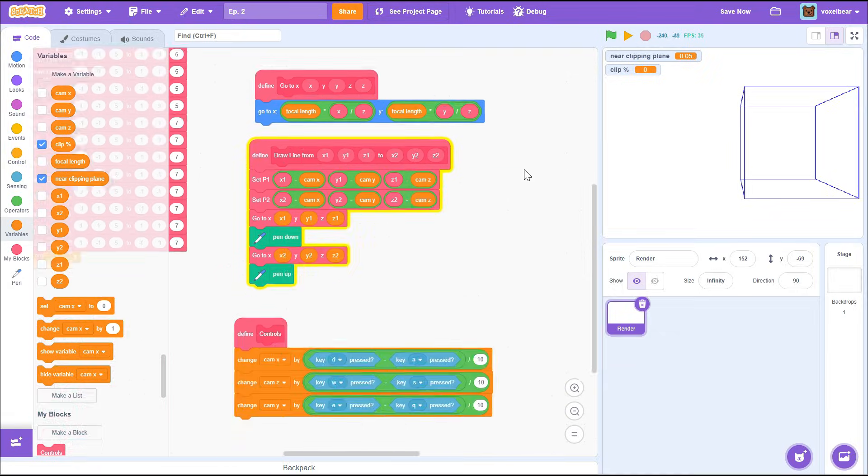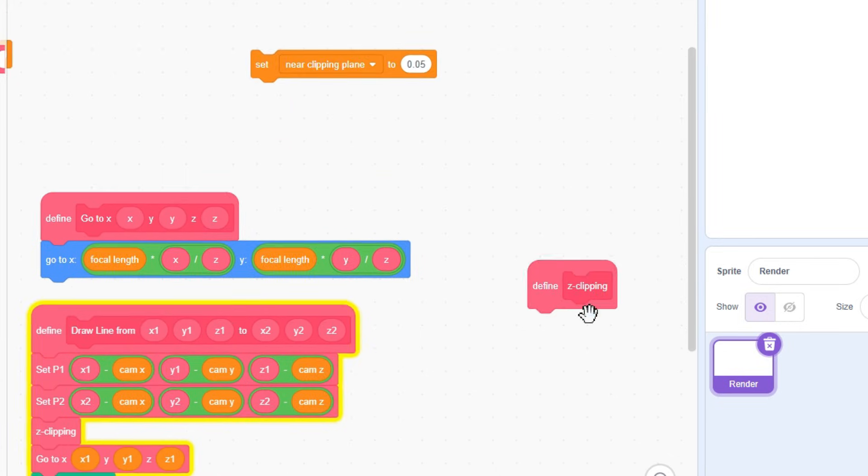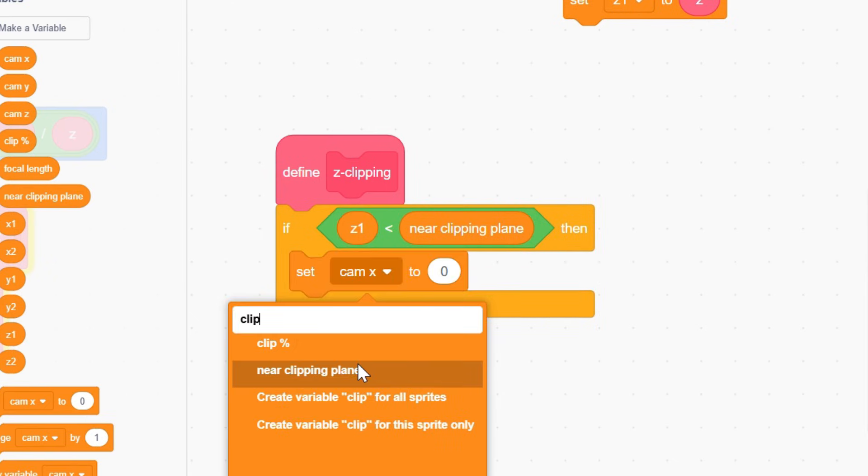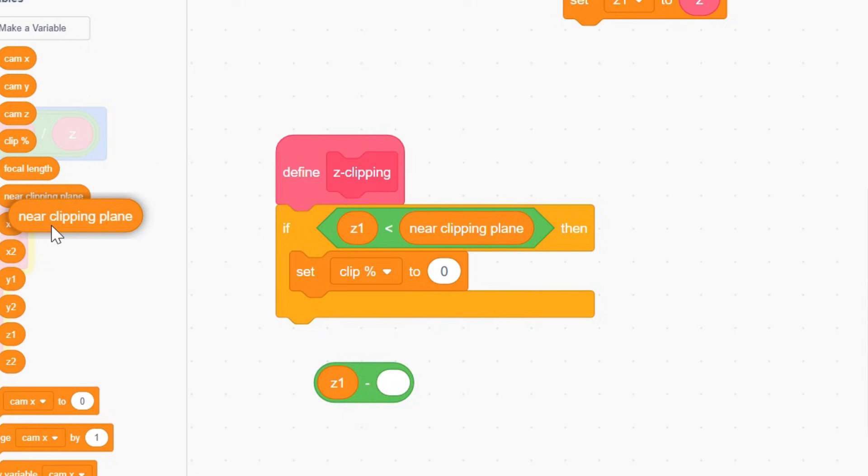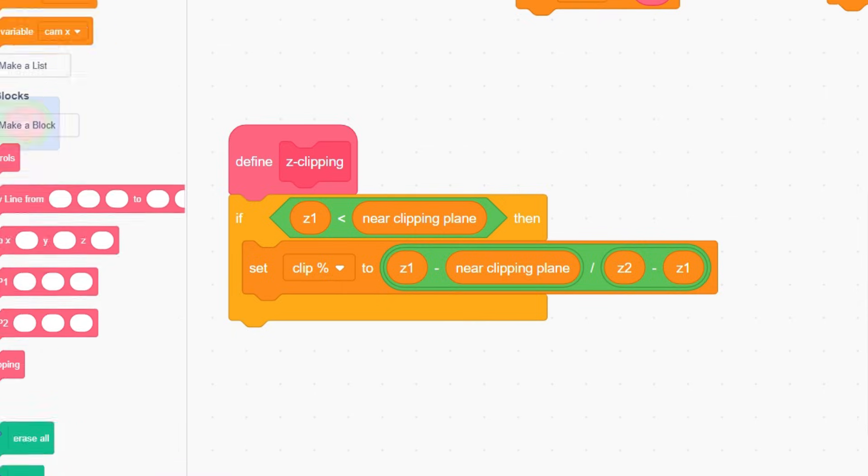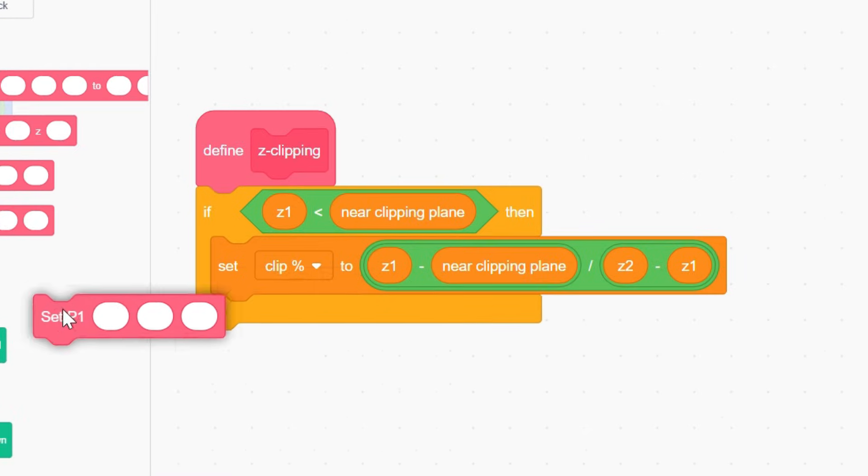So before we draw the lines, we're gonna do z-clipping. In the block we wanna check, if z1 is less than near clipping plane, then we're gonna find the percent of the line that needs to be clipped, which is simply z1 minus the near clipping plane, divided by z2 minus z1. But now that the line is shortened, we'd want to change the x and the y position too, by that percentage.